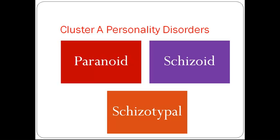Cluster A personality disorders feature eccentric and odd behaviors like social isolation and detachment. Typically present in early adulthood, these individuals are severely ill and can be resistant to treatment. They're often seen in the acute care setting and may require case management when their impairments interfere with day-to-day functioning. They can develop fairly suddenly in individuals who were once normal and then progress with time.